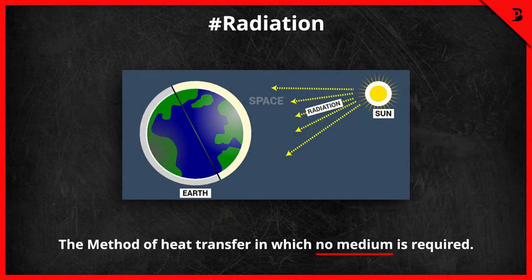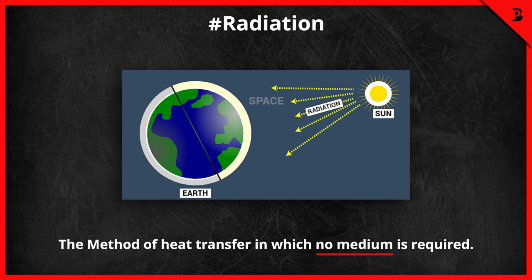Before telling you about radiation, I have a question. The earth is our planet which gets heat from the sun every day. But how? For conduction and convection, both methods require a medium to transfer heat. But in the space between the sun and earth there is a vacuum. So how does heat reach us? This is called radiation — the method of heat transfer in which no medium is required.